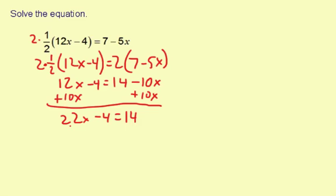Next step is to get rid of the negative 4 that's with the 22x, so I'm going to add 4. 22x equals 14 plus 4, which is 18.